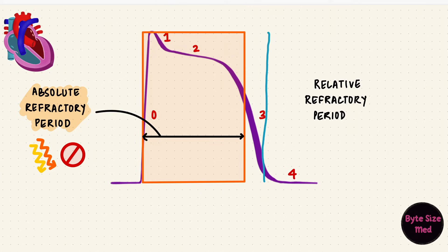From this point until when the cell is almost completely polarized again is the relative refractory period, where a second stimulus, if stronger than usual, may elicit another action potential.